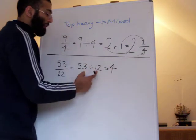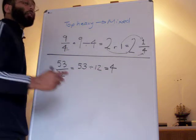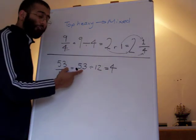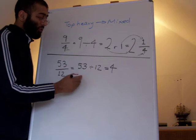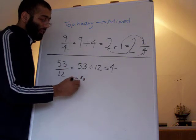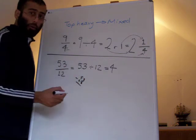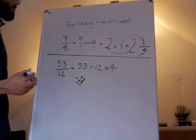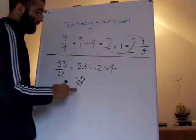So 12 will go into 53 four times. Now that gives a total of 48, but here we got 53, so we got to do a little calculation: 53 take away 48 to work out the remainder. If you do that mentally you'll know the answer is five.